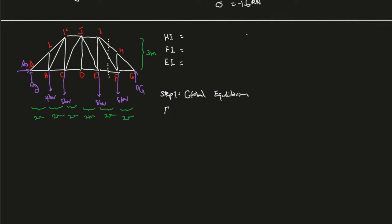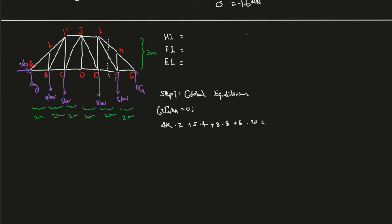So sum of the moments at A going counterclockwise is the positive equals to zero. So that is 4 times 2 plus 5 times 4, and 8 plus 8 times 8, plus 6 times 10. And since all of these are going into the clockwise direction, this is the only forces counteracting these forces in terms of the moment.